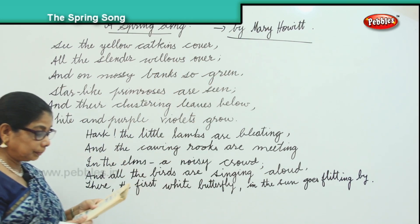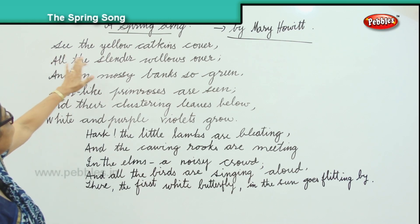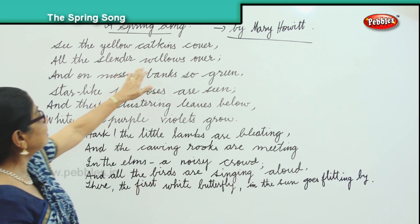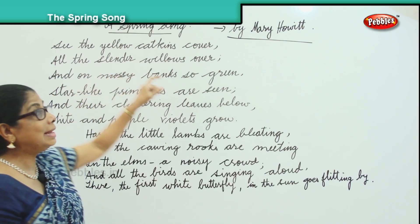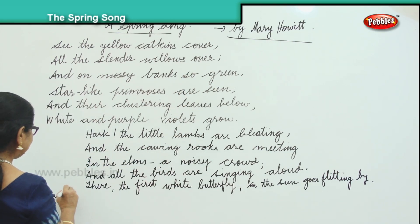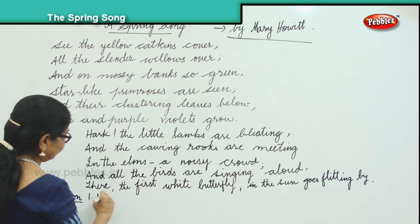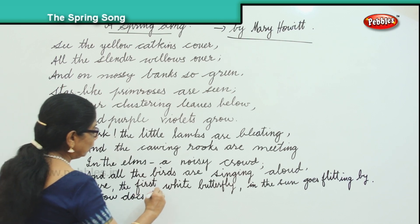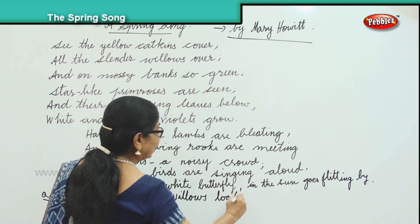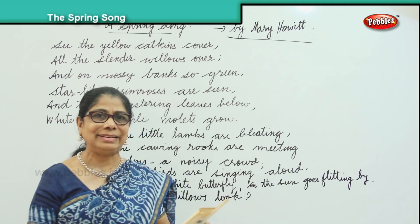These are some of the small questions. My question is, how does the willow look? It says, 'see the yellow catkins cover all the slender willows over.' The willows look slender. Slender means thin. The first question: how do the willows look? The willows look slender — all the willows look thin and tall.